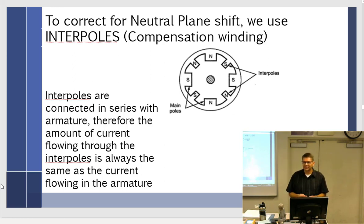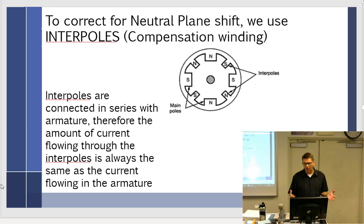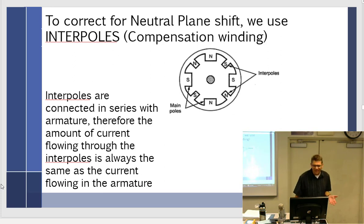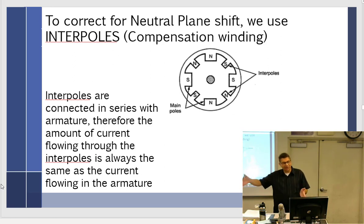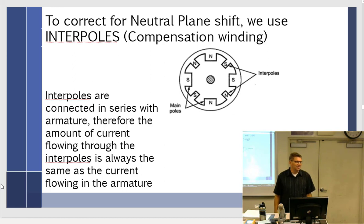Interpoles are these little tiny poles in between the main poles, also called compensation windings. The interpole is going to correct for the amount of current flowing through the armature, but somehow we have to tell the interpoles how much current is flowing. The more current that flows through the armature, the stronger the interpoles have to be to compensate. So we put them in series with the armature — that way any current flowing through the armature also flows through the interpoles.